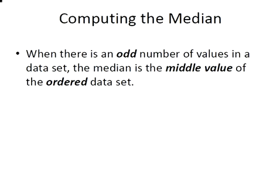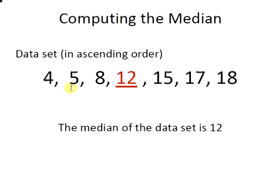So when there is an odd number of values in a data set, the median is the middle value of the ordered data set. So here we have it again, 4, 5, and 8, those three values are less than 12. 15, 17, and 18, those values are greater than 12. 12 is the middle value of this data set, so the median of the data set is 12.